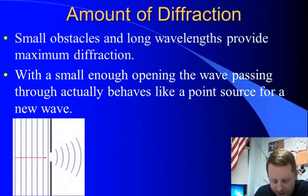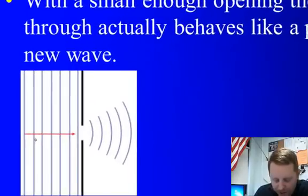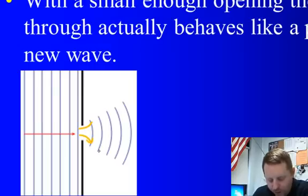If you look down here in the diagram below, we have a wave, and you can see the wave fronts coming to the right. They see a small opening, and as they pass through that, because they're bending around the opening, it almost looks like you have a point source for a new wave.